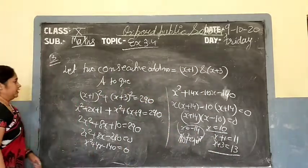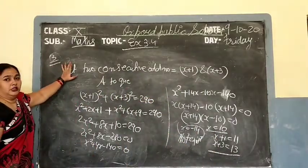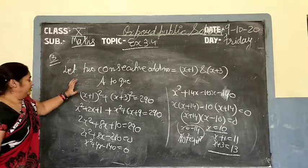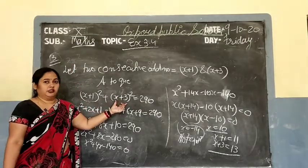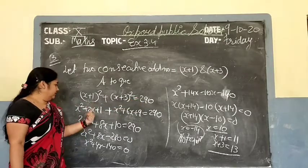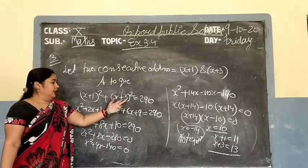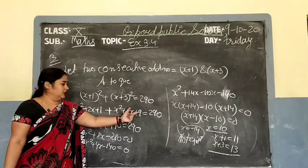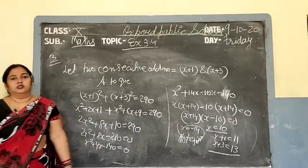So x equals 10. Therefore x plus 1 equals 11 and x plus 3 equals 13. The two consecutive odd numbers are 11 and 13. You can verify: 11 squared plus 13 squared equals 121 plus 169 equals 290.